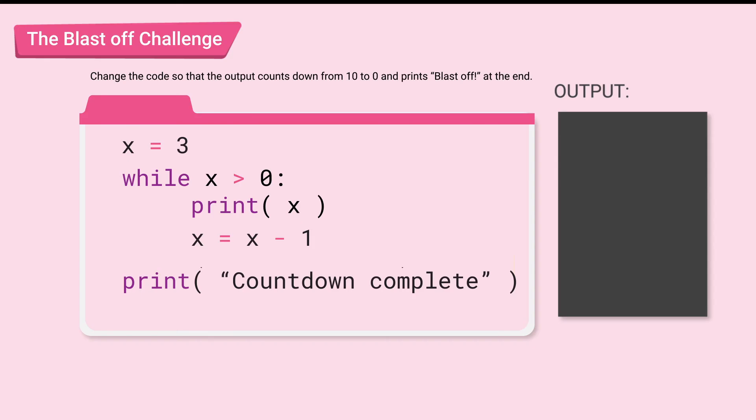Here's one solution. Change x equals 3 to x equals 10, so that 10 is the starting value. Then we need to change the loop condition, so that the output doesn't stop at 1, but stops at 0.